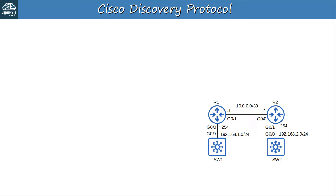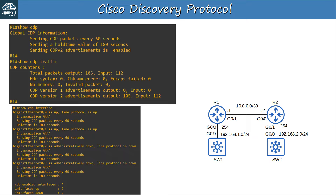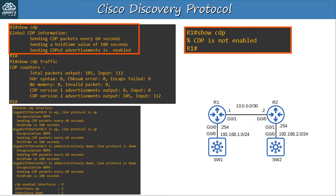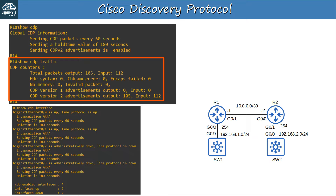To demonstrate CDP, as well as LLDP later, I'll use this network: two routers and two multilayer switches, although I'm not using any Layer 3 functions on the switches. Before looking at the CDP neighbor table, here are a few other basic CDP show commands. SHOW CDP tells us the CDP timer — 60 seconds by default — the CDP hold time — 180 seconds by default — and it also shows which version of CDP is being used, version 2 by default. Note that if CDP isn't enabled on the device, you'll get a message like 'CDP is not enabled' when you try to use the SHOW CDP command.